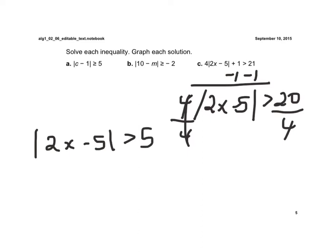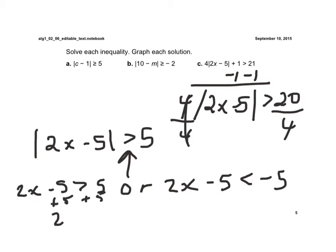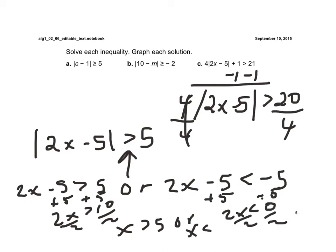Now I'm ready to solve. Again it's an 'or' because of that. So I have 2x minus 5 is greater than 5, or 2x minus 5 flip and change. We solve. I'm going to add 5, I get 2x is greater than 10, divided by the 2 I get x is greater than 5. Or I add the 5 and I get 2x is less than 0, divided by the 2 I get x is less than 0.